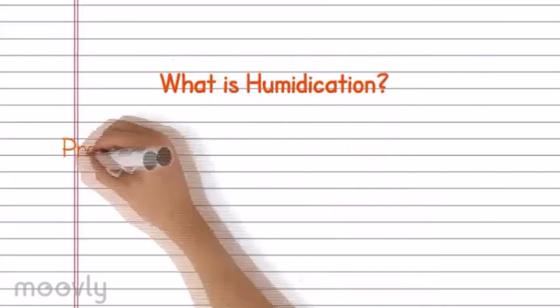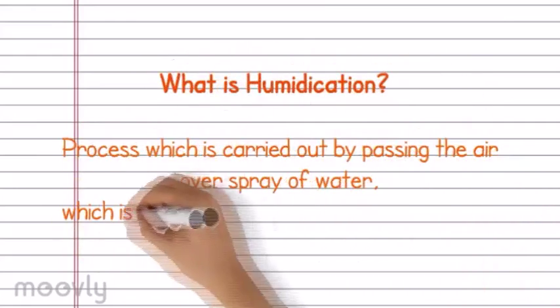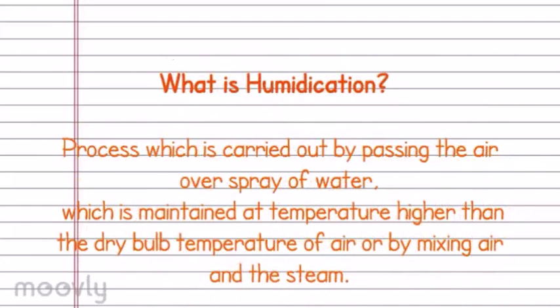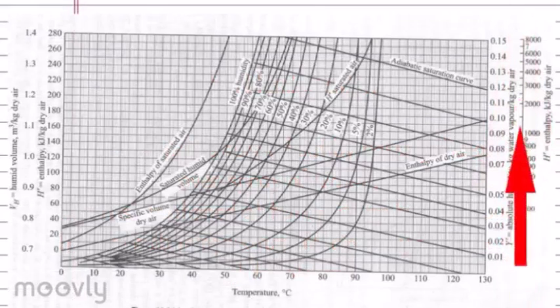The process in which the moisture or water vapor or humidity is added to the air without changing its dry bulb (dB) temperature is called the humidification process. This process is represented by a straight vertical line on the psychrometric chart starting from the initial value of relative humidity, extending upwards and ending at the final value of the relative humidity.